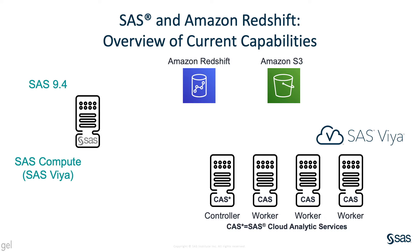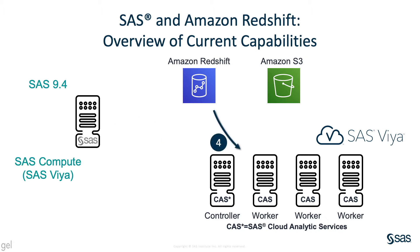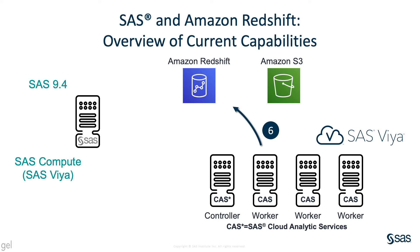During this presentation, we will cover the following scenarios: one, loading data from SAS to Redshift; two, processing Redshift data in place from SAS; three, extracting data from Redshift to SAS; four, loading data from Redshift to CAS; five, processing Redshift data in place from CAS; and six, saving CAS data to Redshift.